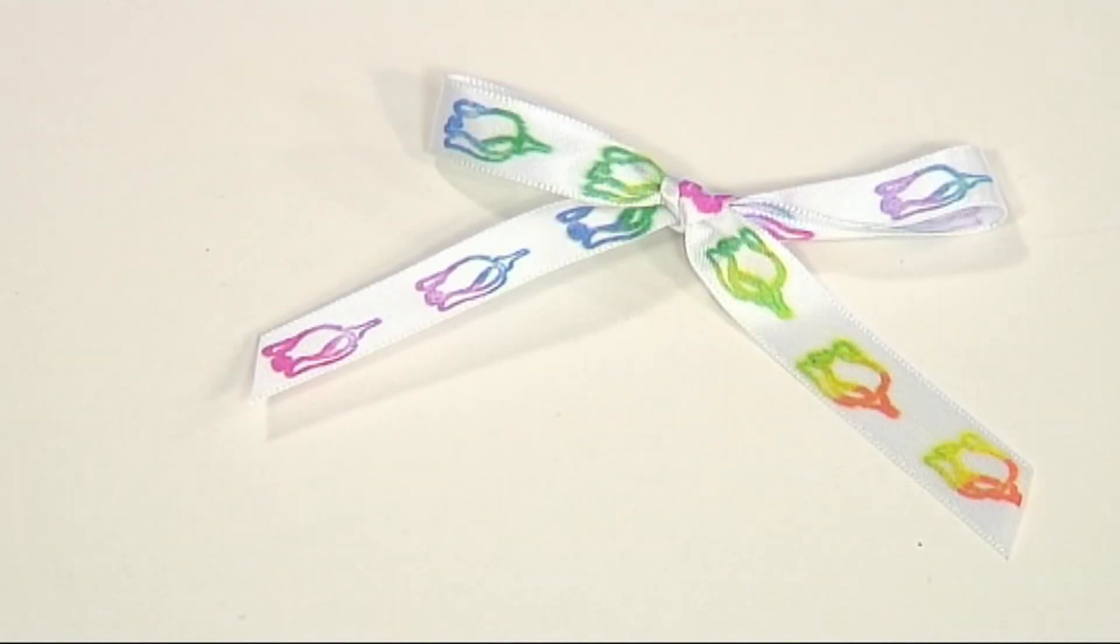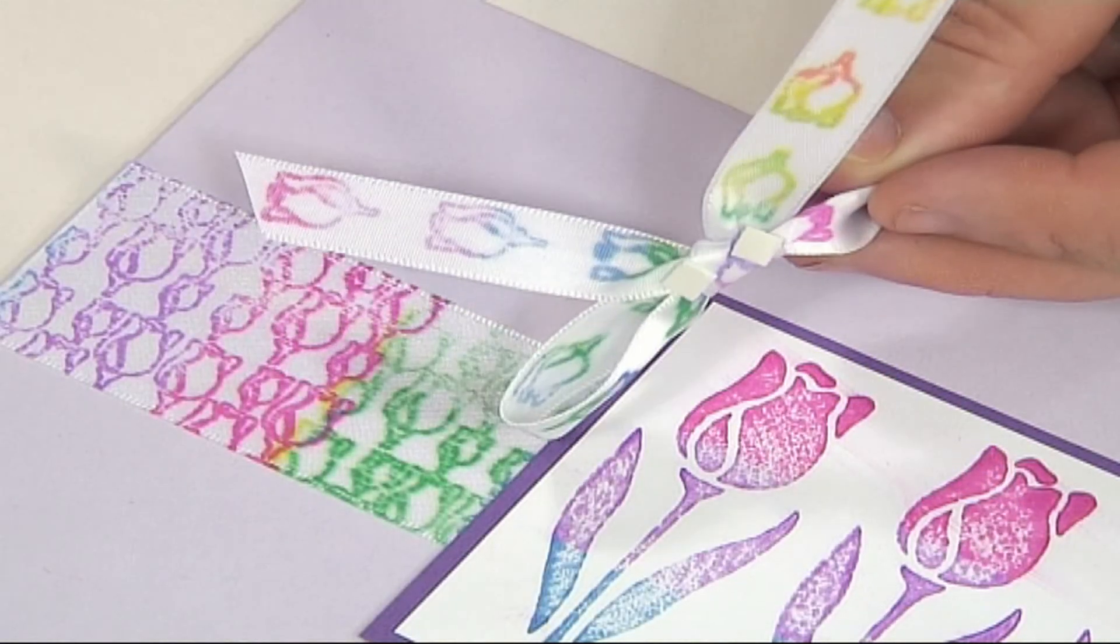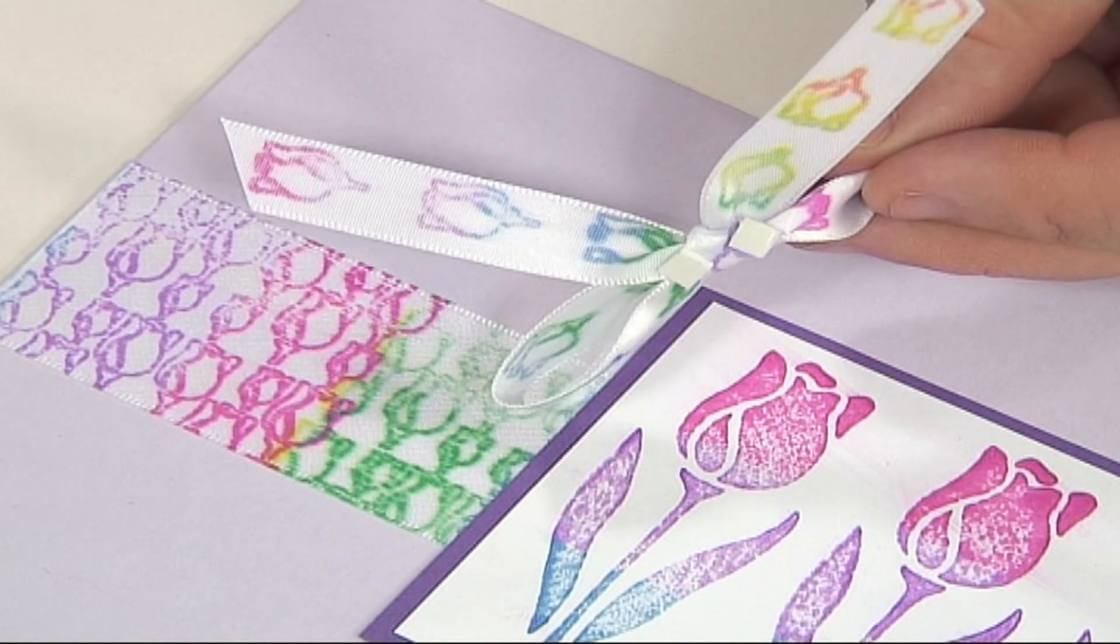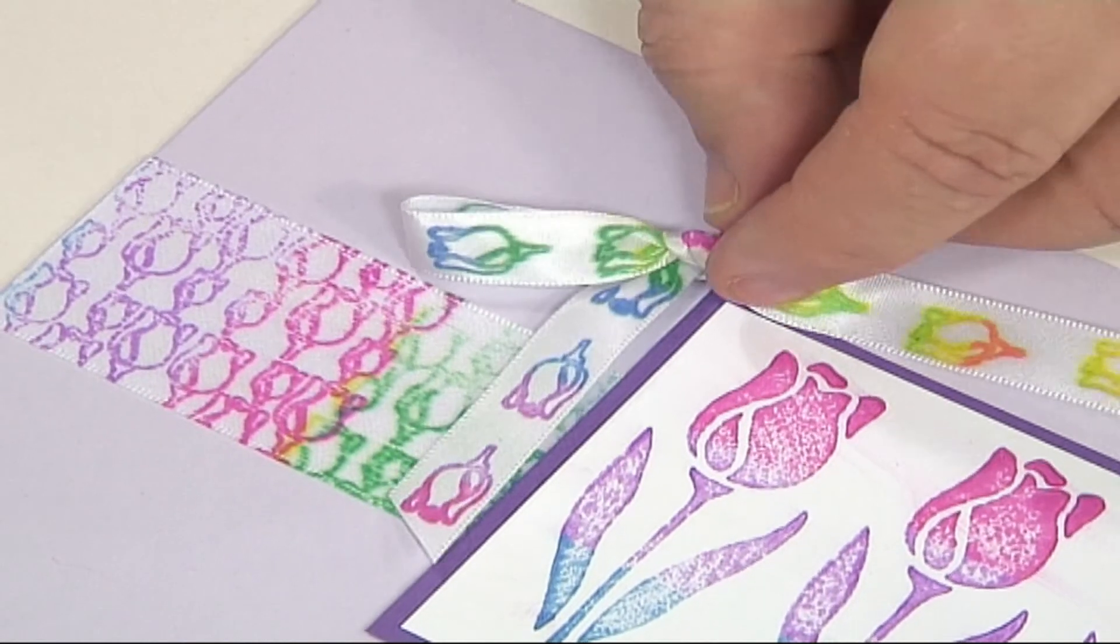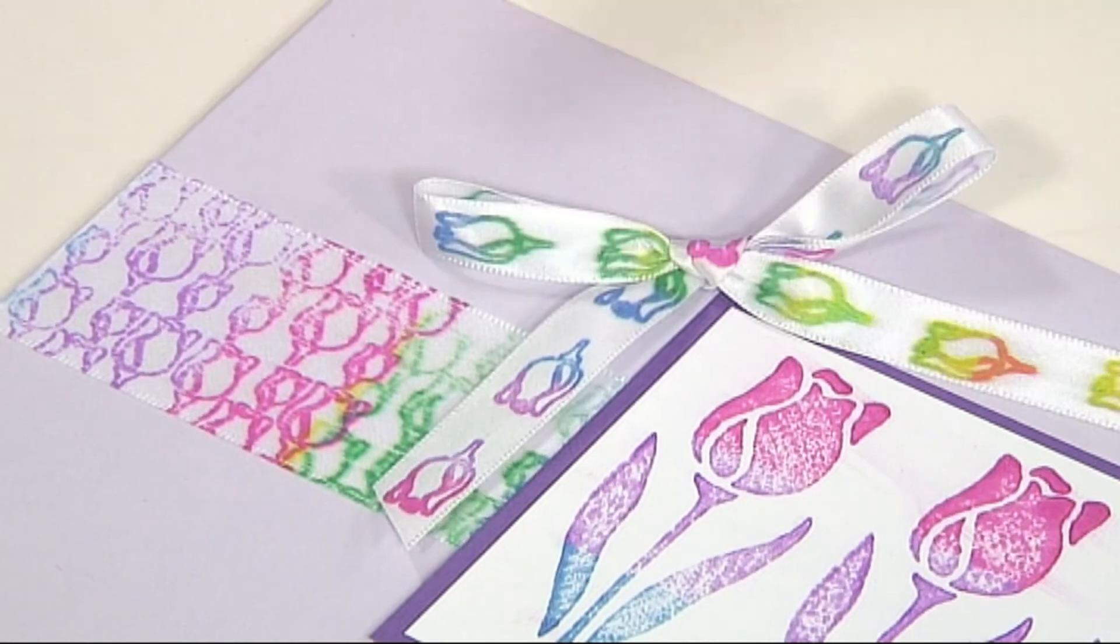I've also taken the small thin ribbon as well, and I've actually stamped onto that using the head of the tulip from the small set of stamps. Then, using some double-sided foam pads—or you could use some silicone glue if you wanted to—just turn that over and stick it on the corner of the design there.